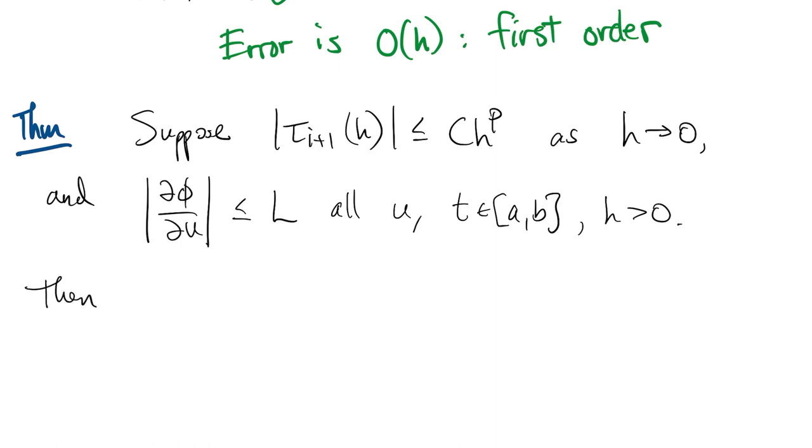Then the difference between the exact solution and the numerical solution is bounded by h to the p times these other things.